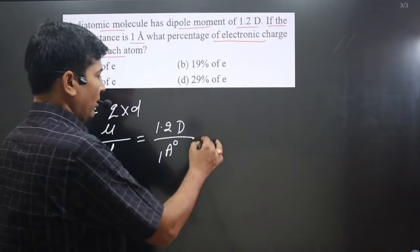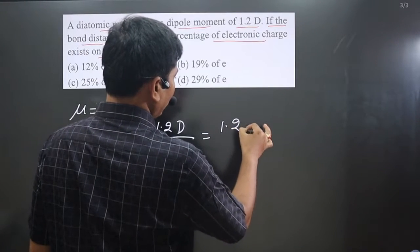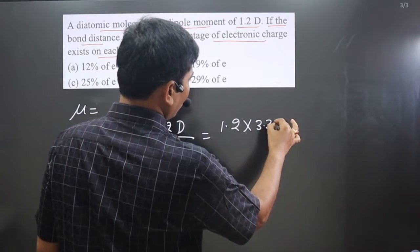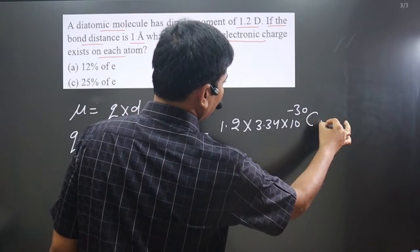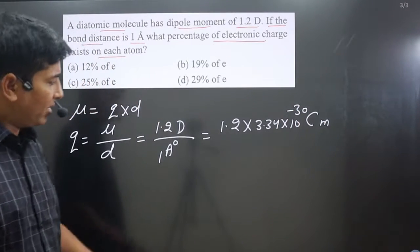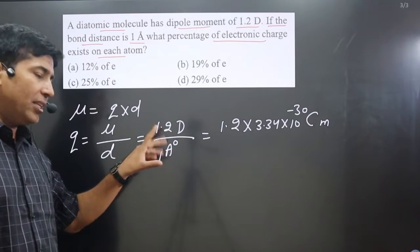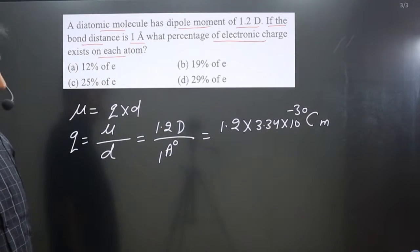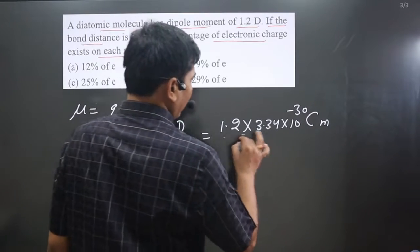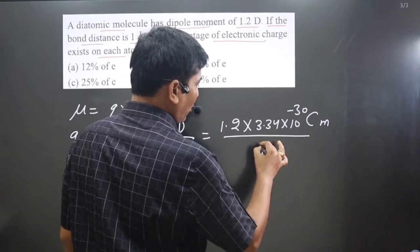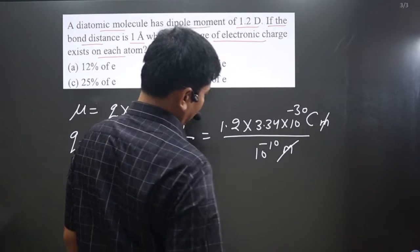1 Debye is equal to, we have 1.2. 1 Debye is equal to 3.34 multiplied by 10 to power minus 30 and it is coulomb meter. To simplify, we maintain the same unit so that meter meter should cancel and final answer should be in coulomb. Divided by 1 angstrom is equal to 10 to power minus 10 meter, meter meter will cancel here.